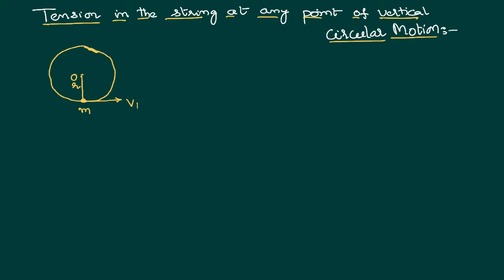The tension always acts towards the point of suspension and creates tightness in the wire. The weight of the body always acts in the downward direction because acceleration due to gravity always pulls it downward. Since the body is in circular motion, there will always be a centripetal force. Centripetal force is never an outside force — it is the effective force acting towards the center.